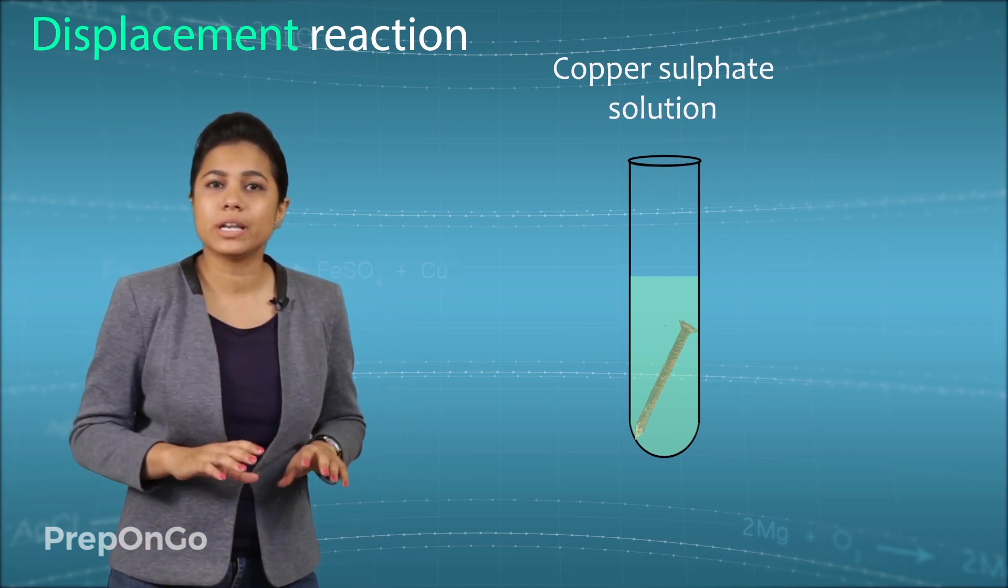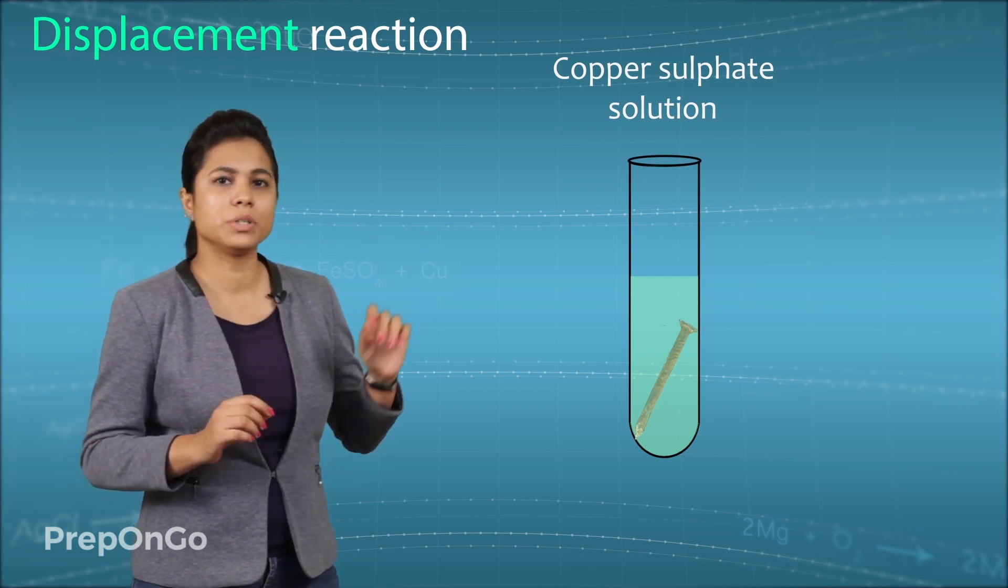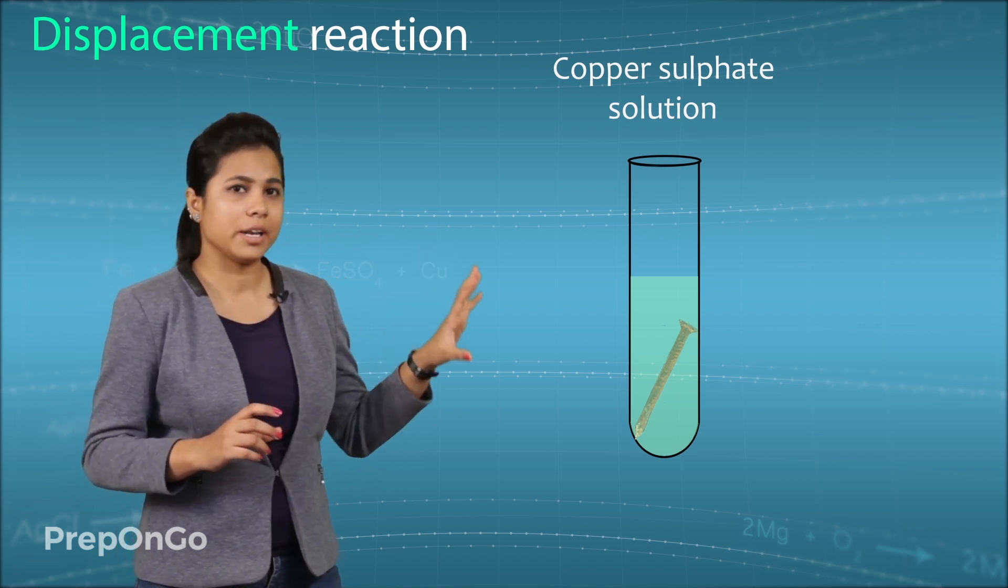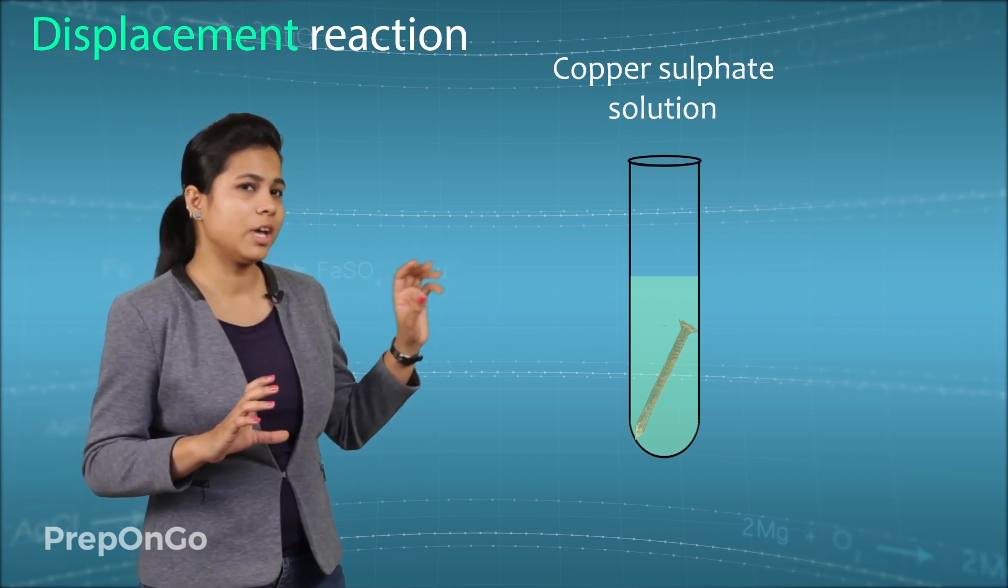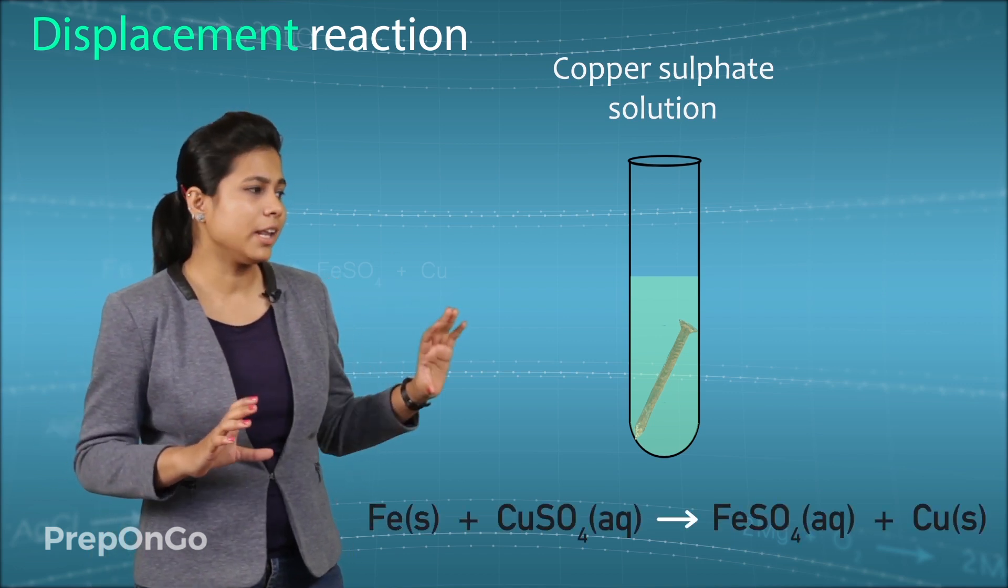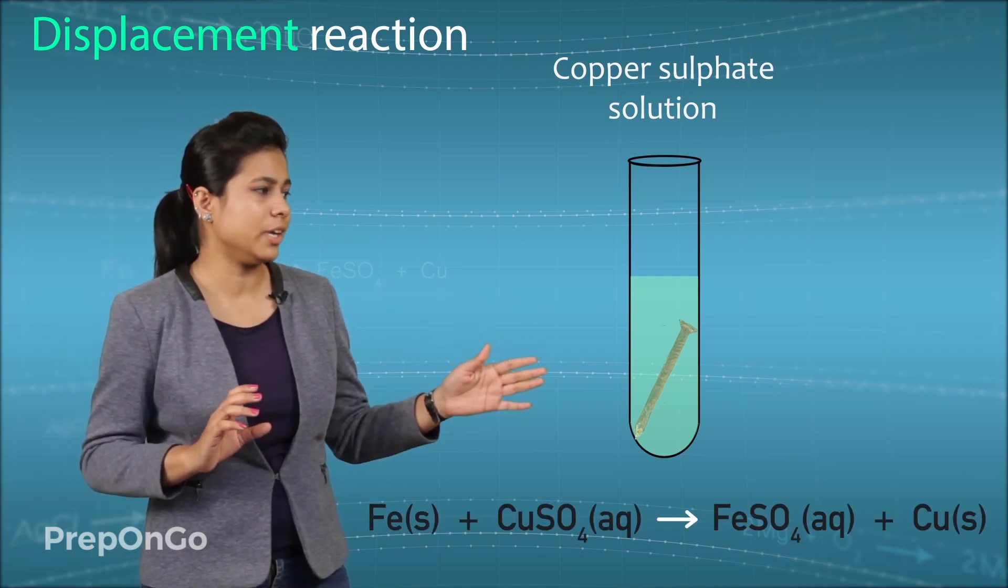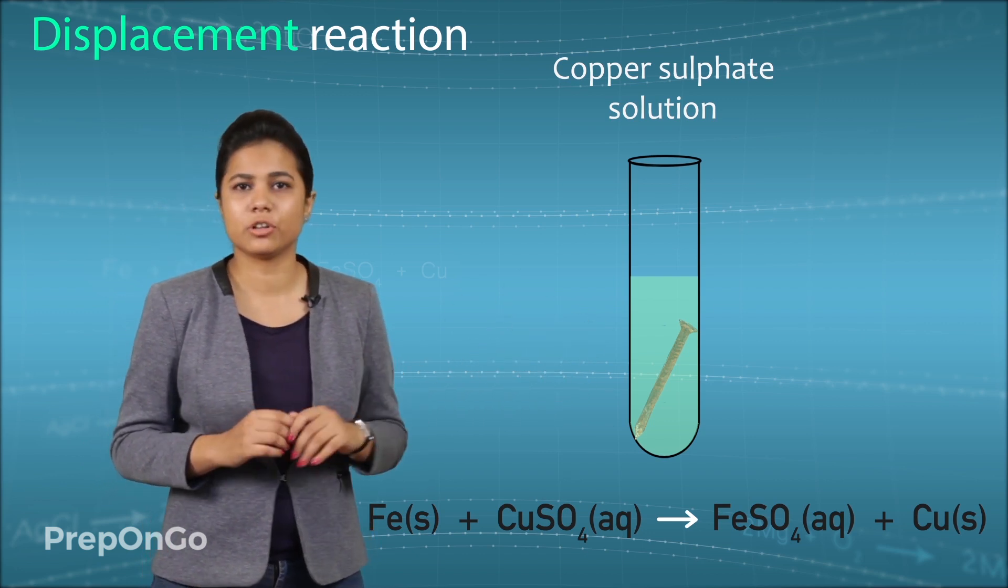The iron which is more reactive than copper has displaced the copper from its solution and become iron sulphate. So you see the copper has deposited on the iron nail. So the reaction which has occurred is iron when reacted with copper sulphate formed iron sulphate and copper was deposited on the iron nail.